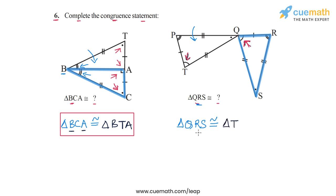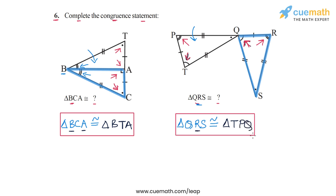Corresponding to R in triangle QRS, we have vertex P in the second triangle, so we write P. Then we write the third vertex Q. So triangle QRS is congruent to triangle TPQ. This is how you complete the second congruence relation, and with that we have completed question number six.